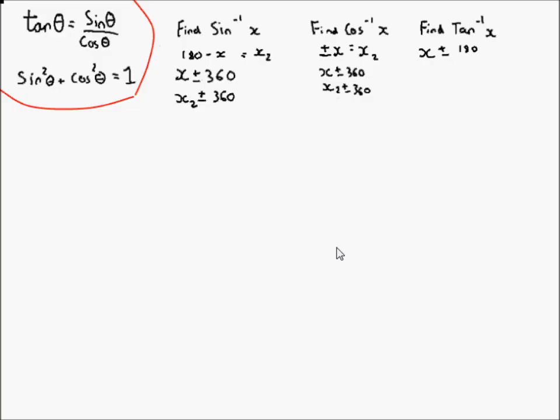Hello and welcome to this introduction on how to use trigonometric functions and identities to find unknown angles. Here we have sine, cos, and tan and their inverses.